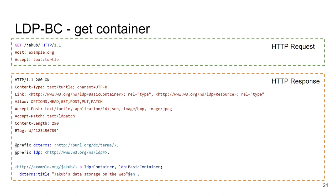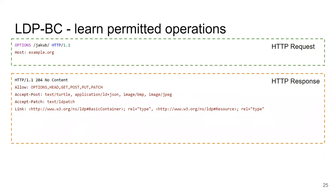If we are only interested in what we can do with a resource and not in how it looks, we can use the HTTP OPTIONS method. We get a 204 No Content response, with the rest of the headers showing the allowed methods and which media types are supported with each method.